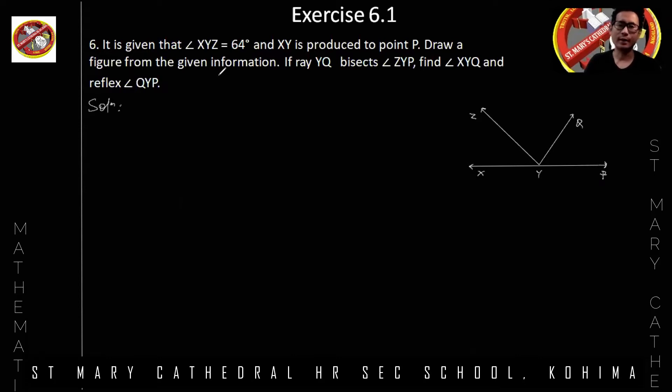It is given that angle XYZ is equal to 64 degrees and XY is produced to point P. Draw a figure from the given information. If ray YQ bisects angle ZYP, find angle XYQ and reflex angle QYP.